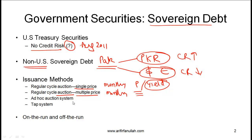Number three is an ad hoc auction system, where the government issues treasury securities when the economic environment is suitable — in other words, when the government is getting the best rate for issuing bonds. In a tap system, additional bonds of previously outstanding bond issues are auctioned. Another general term is on-the-run and off-the-run: on-the-run securities refers to securities that have been very recently issued, and off-the-run securities are those issued some time ago. Investors prefer on-the-run securities, so their yields are slightly lower and their prices slightly higher than off-the-run securities.